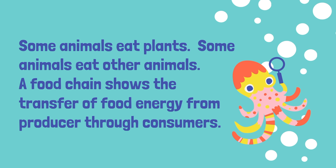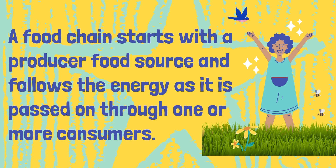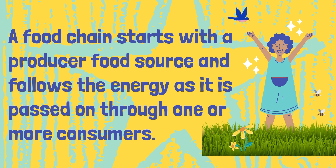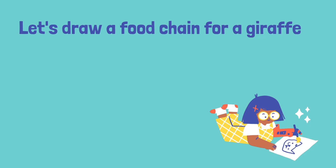Some animals eat plants. Some animals eat other animals. A food chain shows the transfer of food energy from producer through consumers. It shows the flow of that energy. It starts with the producer or food source and follows the energy as it's passed on through one or maybe even more consumers.